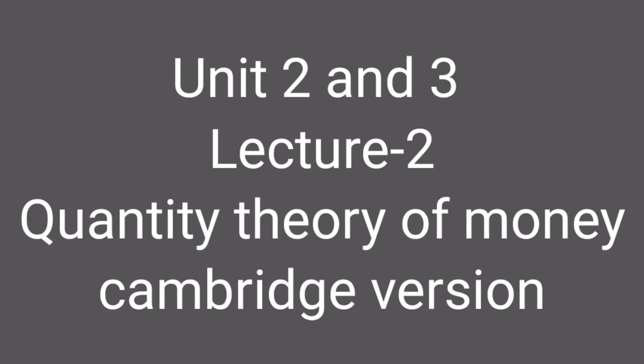Welcome to the second lecture of Unit 2 and 3. In this lecture I am going to start with the quantity theory of money, but with the Cambridge version. In the last lecture we did the quantity theory of money and the conclusion was that M times V equals P times Y. That is going to be true in this version as well, but the methodology will be different in the Cambridge version.